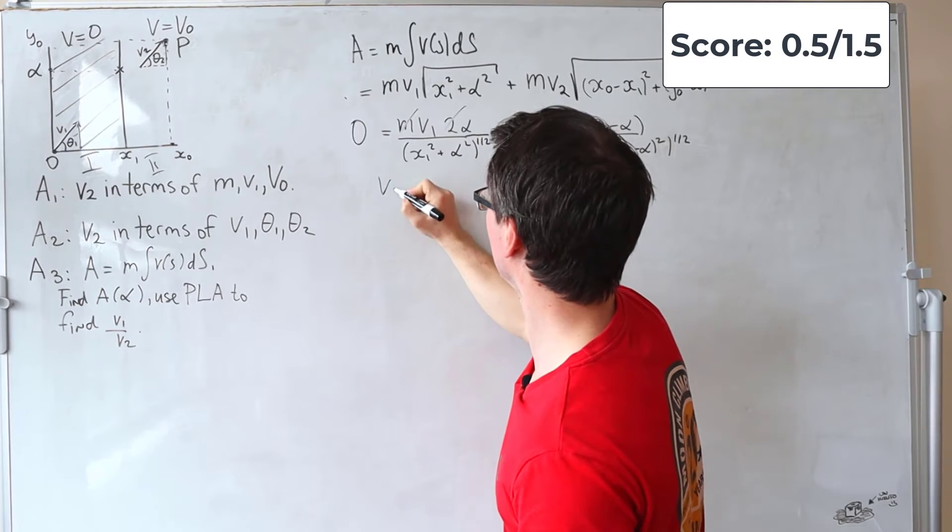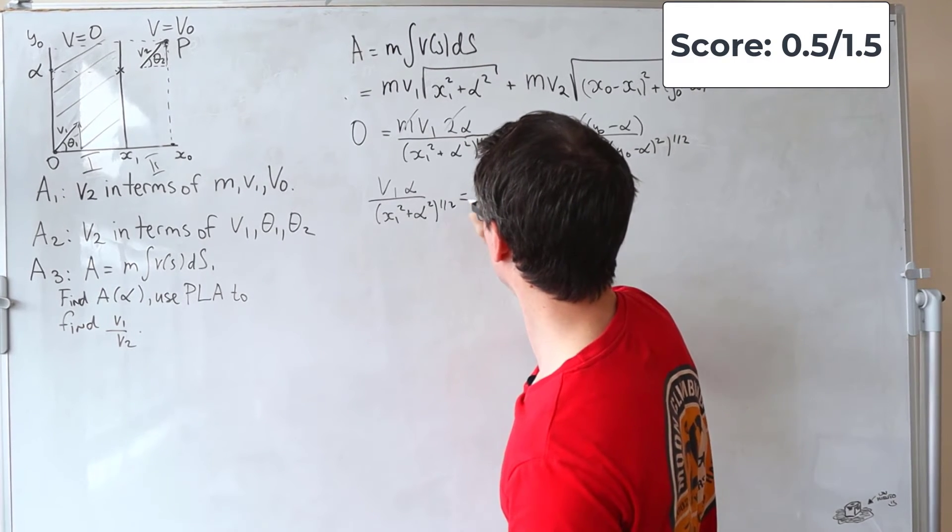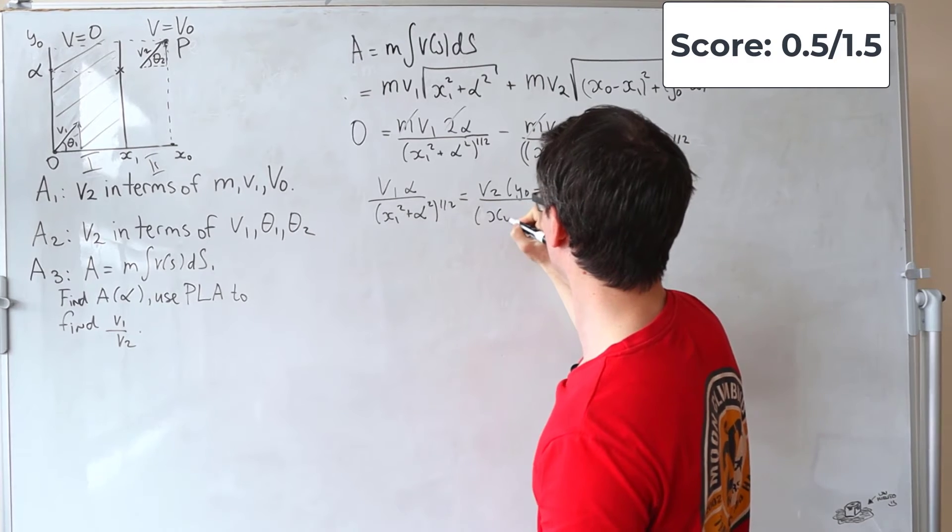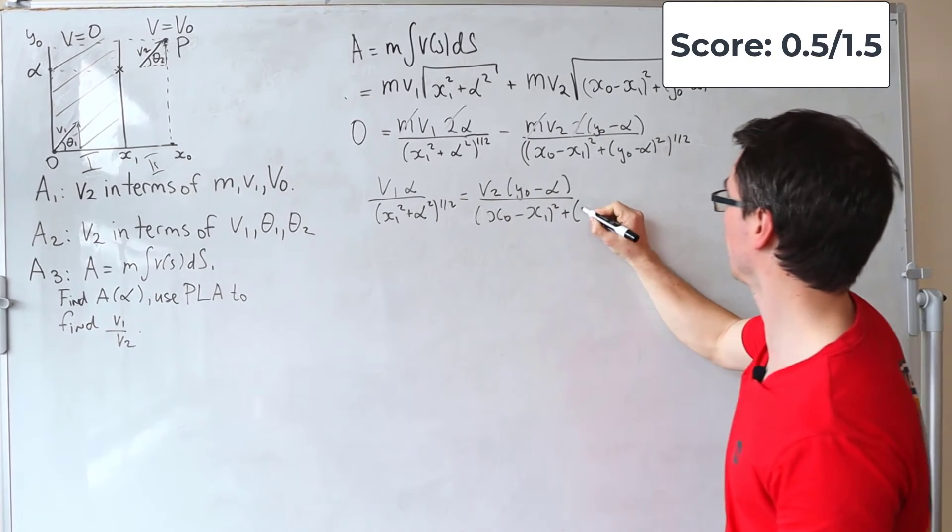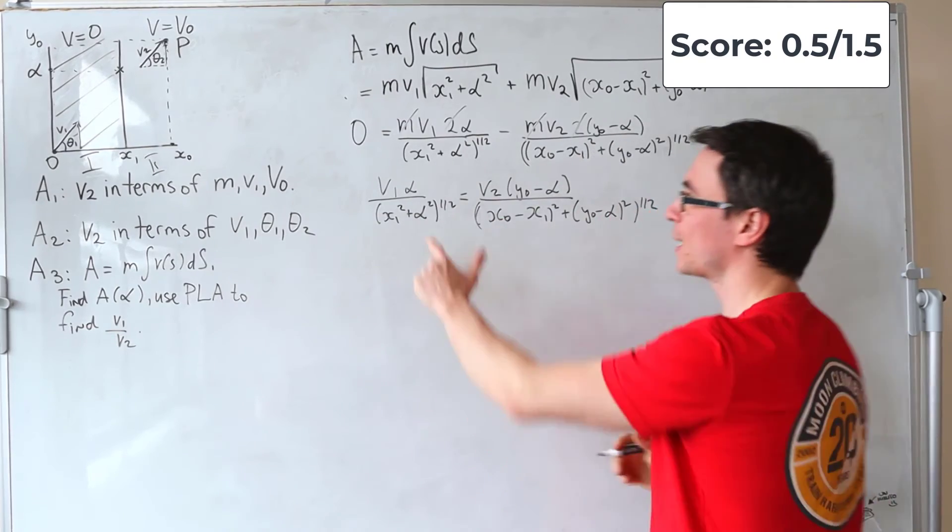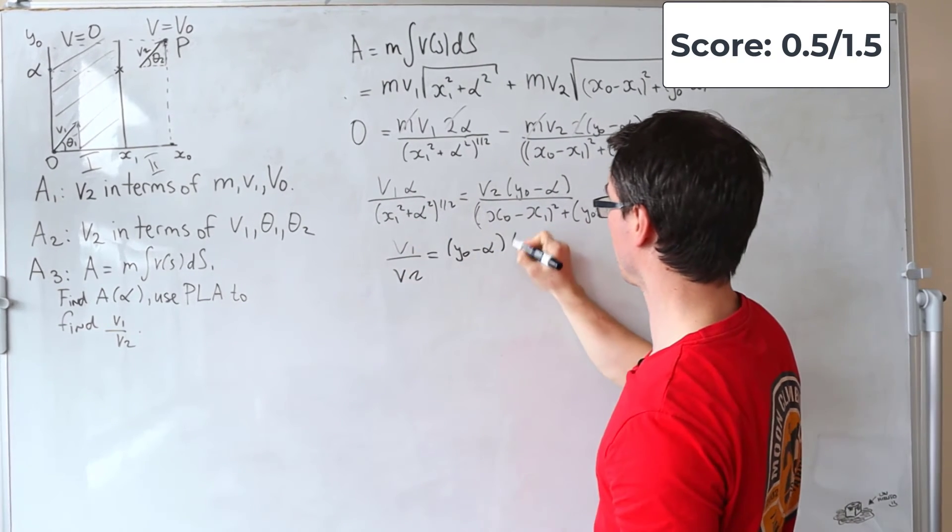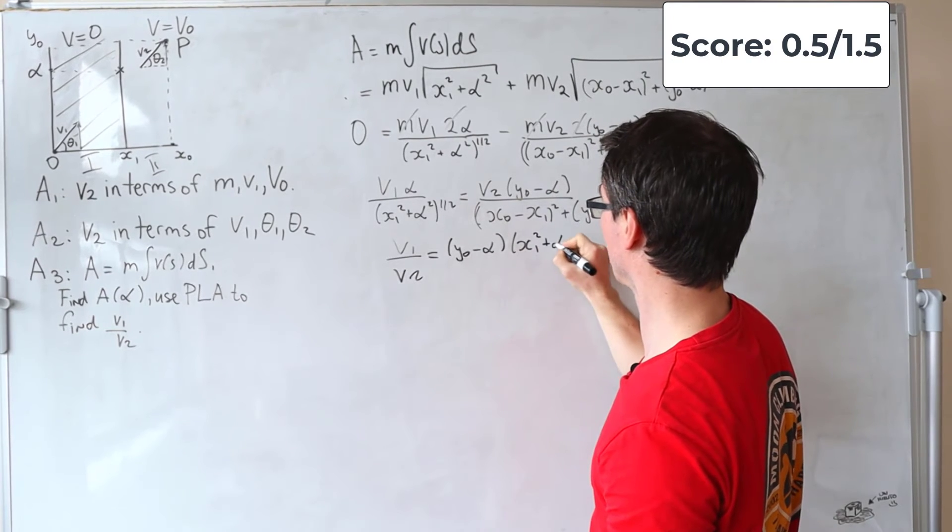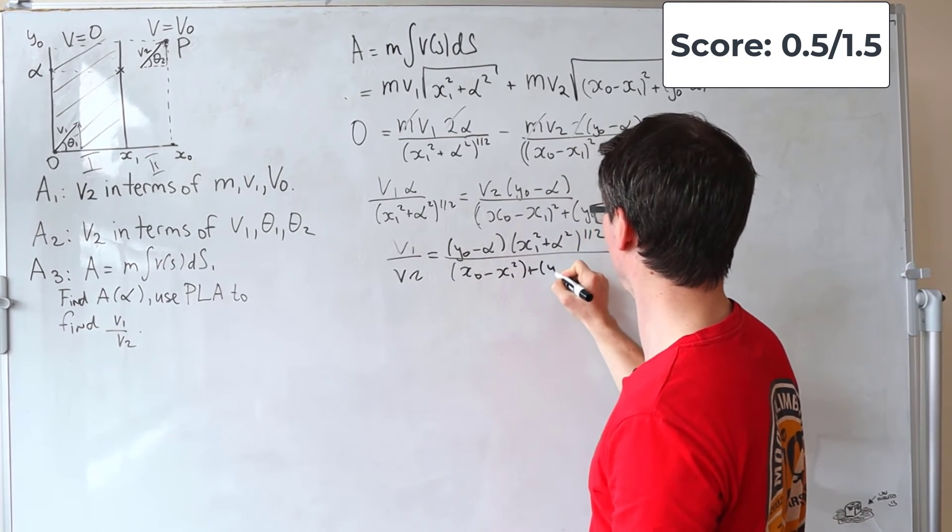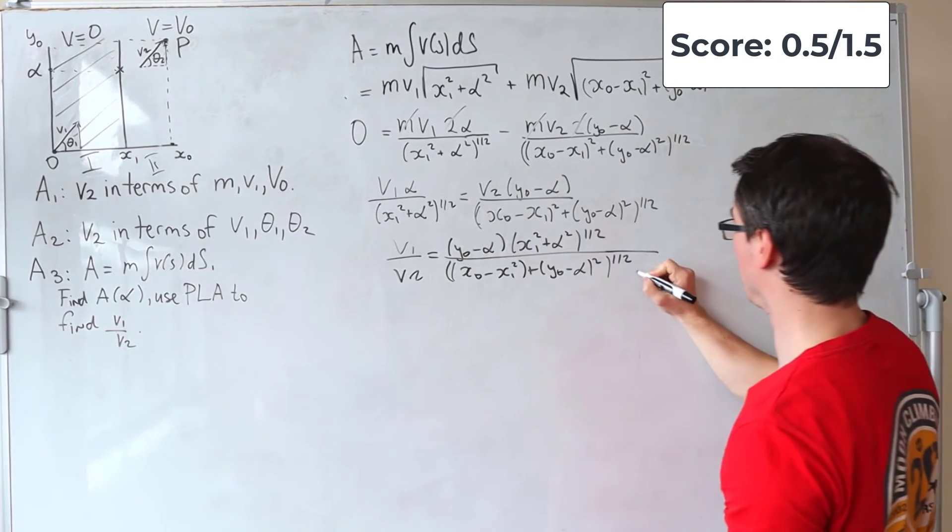And what we're left with is that v1 alpha divided by x1 squared plus alpha squared raised to the power of a half will be equal to v2 y0 minus alpha, divide that by x0 minus x1 squared plus y0 take away alpha squared. This whole thing is raised to a power of a half. And now, let's rearrange for v1 over v2, which will be given by y0 take away alpha multiplied by this expression, x1 squared plus alpha squared raised to the power of a half, divide that by x0 minus x1 squared plus y0 take away alpha squared raised to the power of a half. And then, this factor of alpha will be brought here.